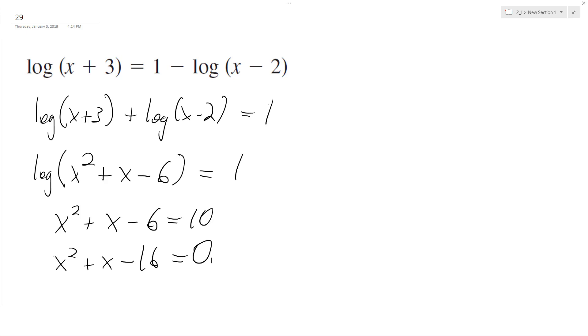Quadratic formula. After running the quadratic formula, we get two solutions, but only one of them is going to be positive and overcome the negative two over here. So x equals square root of 65 over two minus one half.